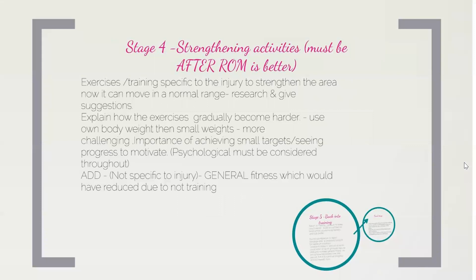Moving on to Stage 4, which is strengthening activities. This must be after range of motion is better. If the physiotherapist gets the firm and feel, they move the patient on to strengthening activities and power building. Exercise training specific to the injury strengthens the area. Exercises gradually become harder — start with body weight exercises such as push-ups and squats, then progressively add weights. In the acute state, body weight exercises are important. Importance is placed on achieving small targets, seeing progress to motivate, and considering the patient psychologically throughout. General fitness may also be reduced due to not training.